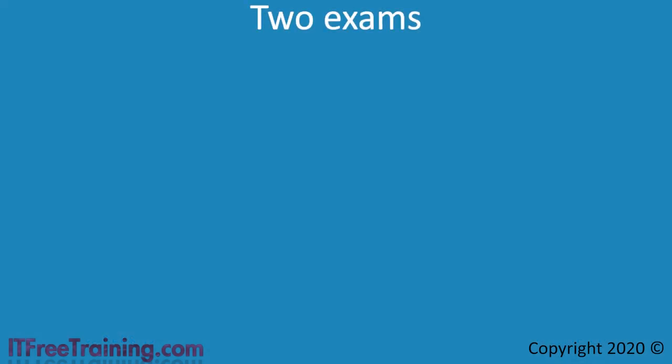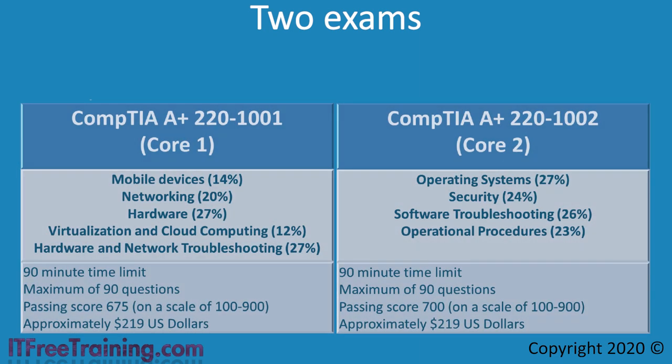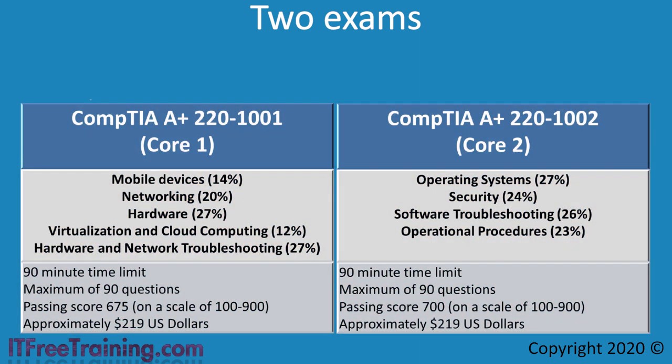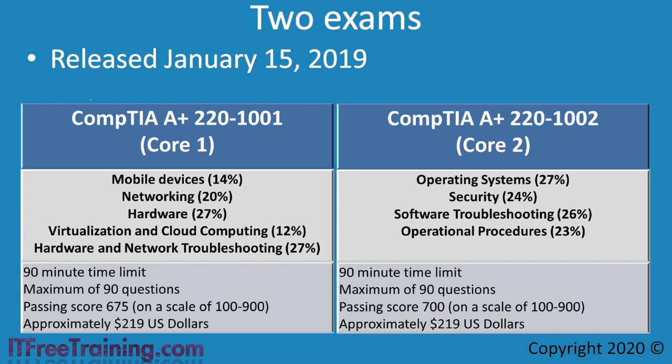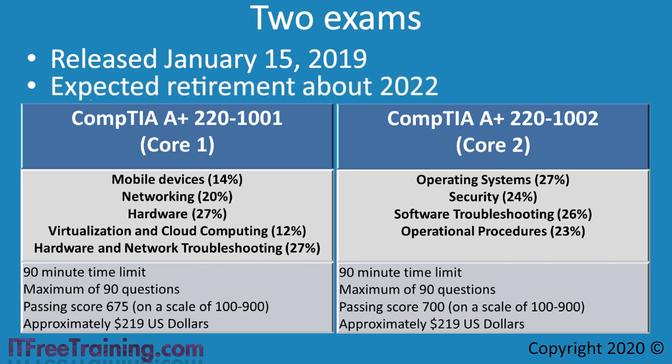The CompTIA A+ certification is a little different from other certifications in that you need to pass two exams to obtain it. These exams are 220-1001 and 220-1002, otherwise known as Core 1 and Core 2. They were released on the 15th of January 2019 and are expected to be retired around 2022. Once you complete both exams, you will have earned your CompTIA A+ certification.